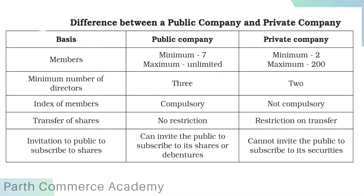In the case of minimum number of directors, a public company requires 3 directors and a private company requires 2 directors. In the case of index of members, it is compulsory to maintain an index of members in a public company, but it is not compulsory for a private company.